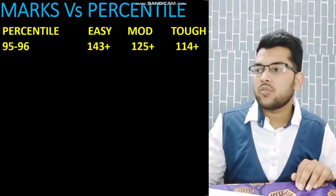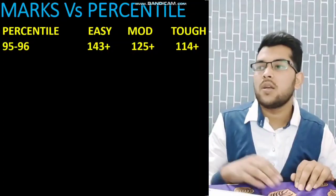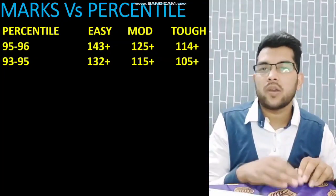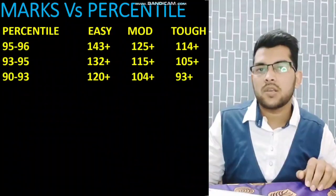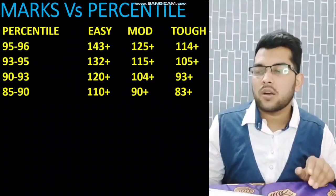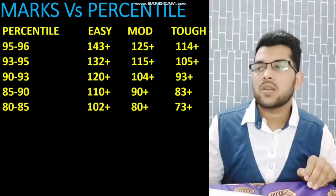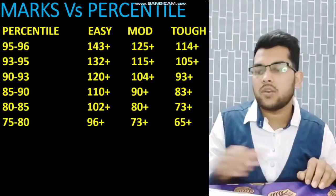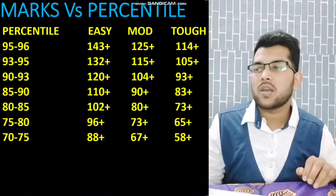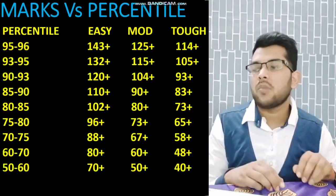For 95 to 96 percentile: easy shift 143+, moderate 125+, tough 114+. For 93 to 95 percentile: easy shift 132+ (moderate and tough check on screen). For 90 to 93 percentile: easy shift 120+. For 85 to 90 percentile: 110+. For 80 to 85 percentile: 102+. For 75 to 80 percentile: 96+. For 70 to 75 percentile: 88+. For 60 to 70 percentile: 80+. For 50 to 60 percentile: 70+. For 40 to 50 percentile: 60+.